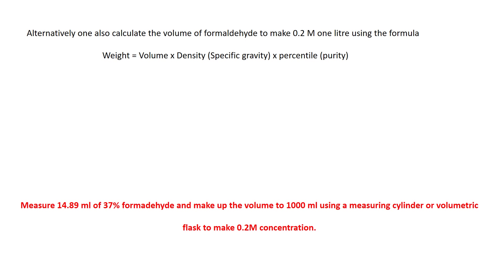Measure 14.89 mL of 37 percent formaldehyde and make up to a volume of 1000 mL using a measuring cylinder or a volumetric flask to make 0.2 molar concentration.